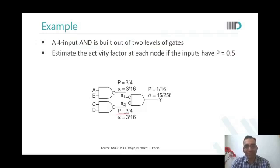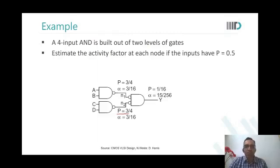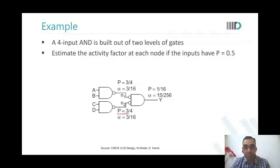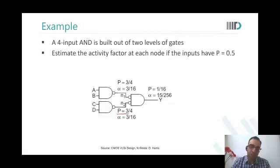A student asks: if we change AND gates to NAND gates, will alpha change? The instructor explains alpha stays the same — it depends on the probability of the output being 1. Just as logical effort g is independent of gate size, if the logical function is AND, then whether you implement it as a NAND followed by an inverter or not, the alpha factor remains the same.